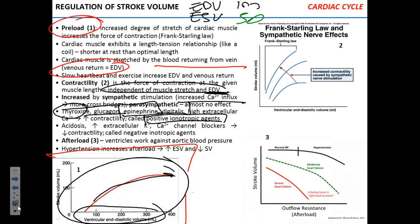You may get a question like: what is a positive inotropic agent? Does it increase strength of contraction, decrease strength of contraction, increase heart rate, or decrease heart rate? You have to pick one. So positive inotropic agents increase the strength of heart contraction. Quite obviously, negative inotropic agents decrease it.